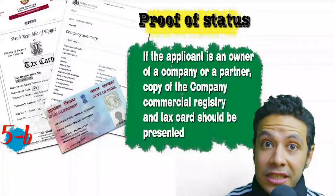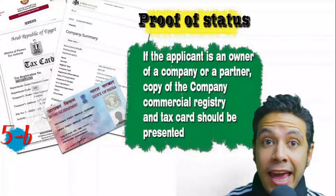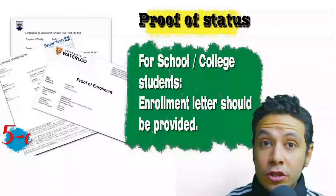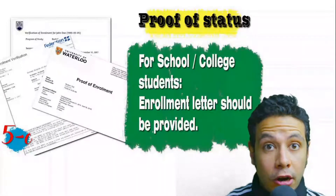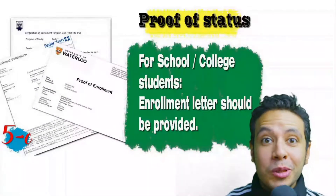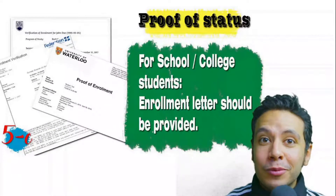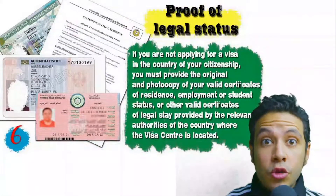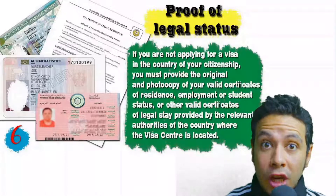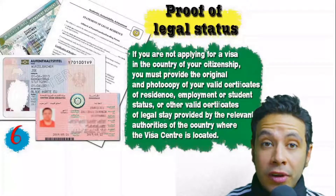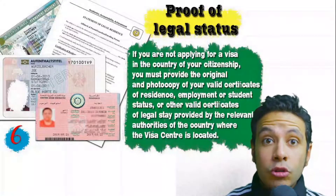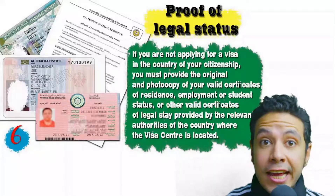If you own or run a business, your commercial registry and tax card must be presented. If you are a student, an enrollment letter must be provided by your university or school. In some cases, if you are applying from a country different from your own, you will need to provide proof of legal status — a certificate of legal residence in that country.